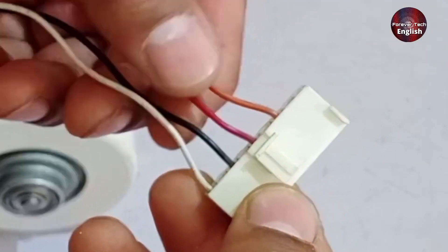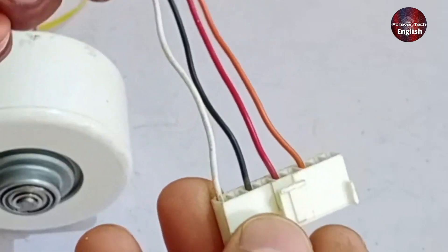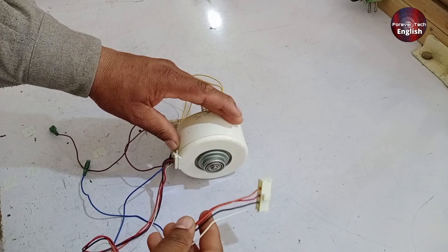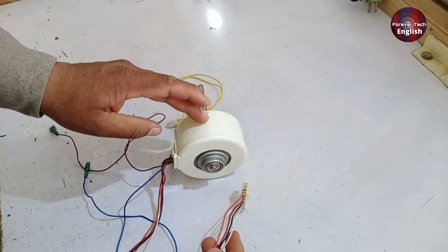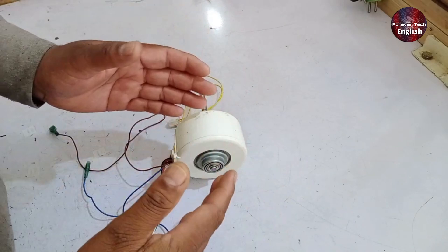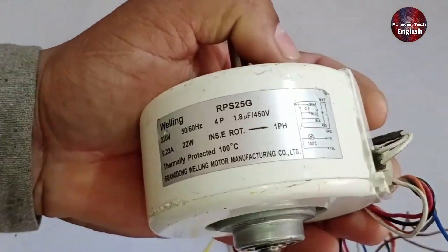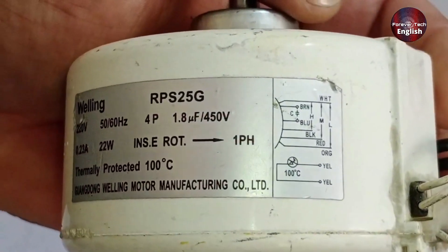One is for neutral, and the other three are for high, medium, and low speeds. Next, I'll explain the winding inside this motor and how it's controlled, which will make it easier for you to connect any motor you encounter. There's also a sticker on the motor that provides this information. But if the sticker isn't there, I'll tell you how to understand the connections.